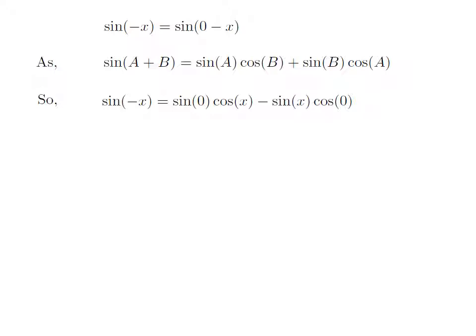So, sine of 0 minus x is equal to sine of 0 into cosine of x minus sine of x into cosine of 0.